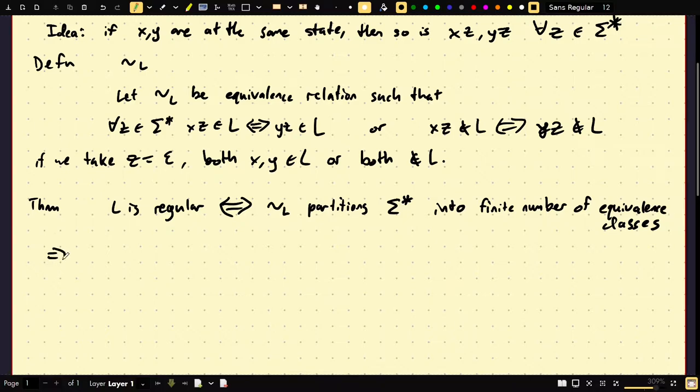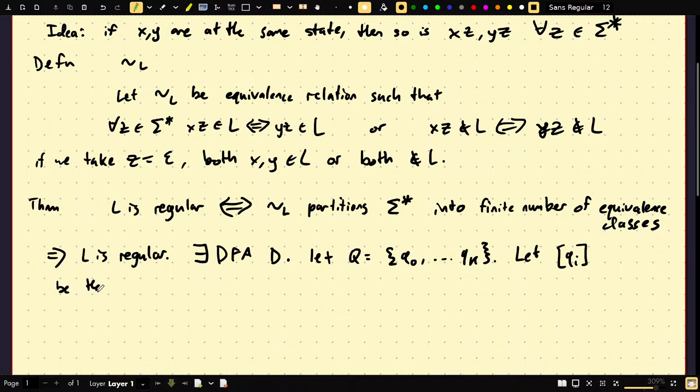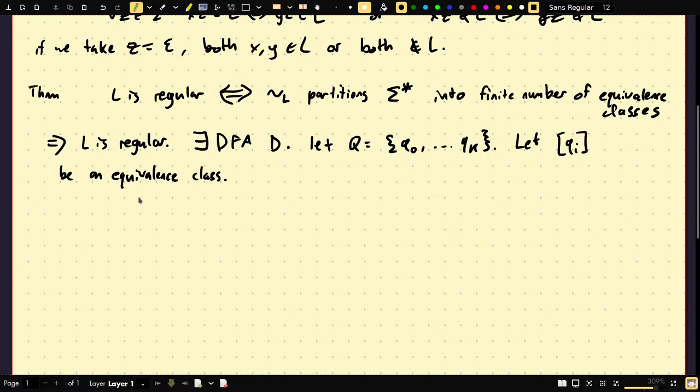So, let's prove it now. Suppose L is regular. Then there exists a DFA D. Suppose the states of the DFA are Q0 to QK. Let QI bracket be the equivalence class. So, the first thing to notice is that because they're equivalence classes, well, I haven't proved these are equivalence classes. But first of all, they're all disjoint. So, they're pairwise disjoint.